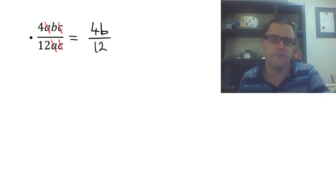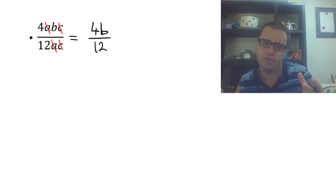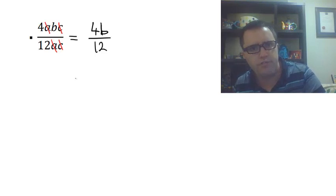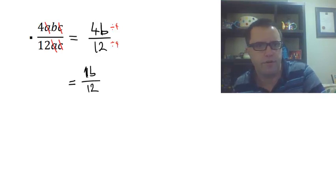Now, hopefully something's gone ding, ding, ding in the back of your mind—4 and 12, I'm pretty sure I can do something with that. The highest common factor of 4 and 12 is 4. So 4 divided by 4 is 1, and 12 divided by 4 is 3. We're going to divide by 4 on both, and we're left with 1b over 12. But we don't use the one anymore, so we're just going to leave that as b/12.